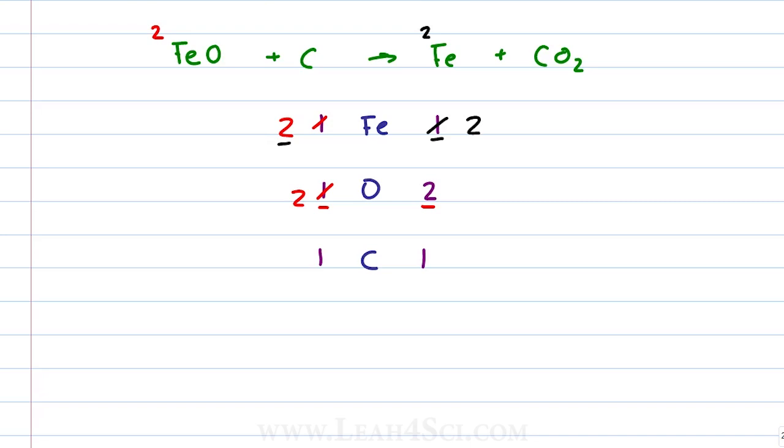Once it looks like you're done, check your checklist. Make sure that all of the atoms are balanced. In this case, I have two iron, two oxygen, one carbon. If your checklist is balanced, you know that your atoms are balanced, you know that your equation is good to go. Now is a good time to bring down your coefficients. I like to cross it out just to make sure there's no confusion. That gives me two FeO, one carbon for the invisible one that's already there, two iron and one CO2.